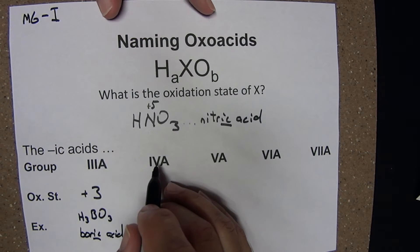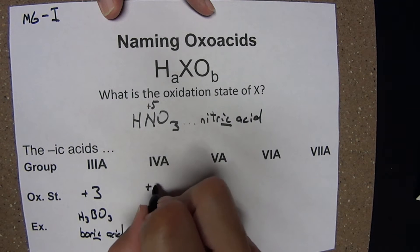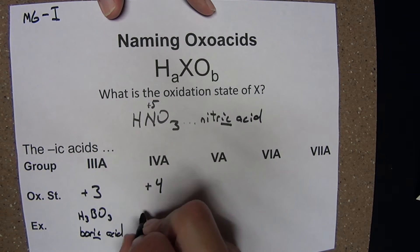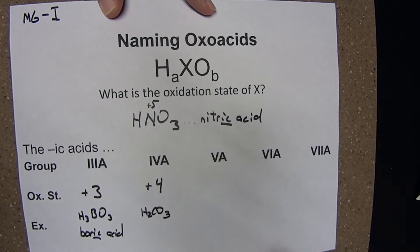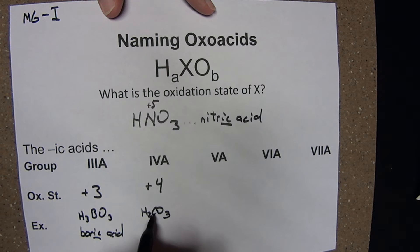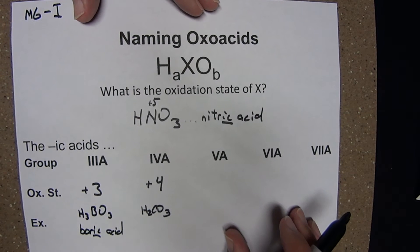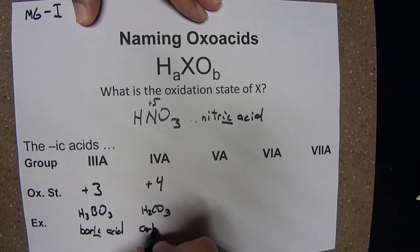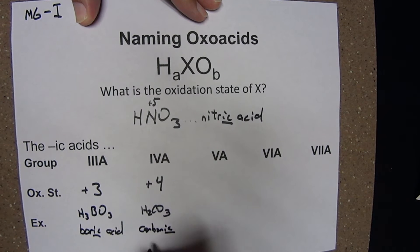Moving to group 4: the oxidation state for the ic acid when X is from group 4 is plus 4. An example is H2CO3. The oxidation state of carbon here is plus 4, which makes this the ic acid in the series. This is carbonic acid.